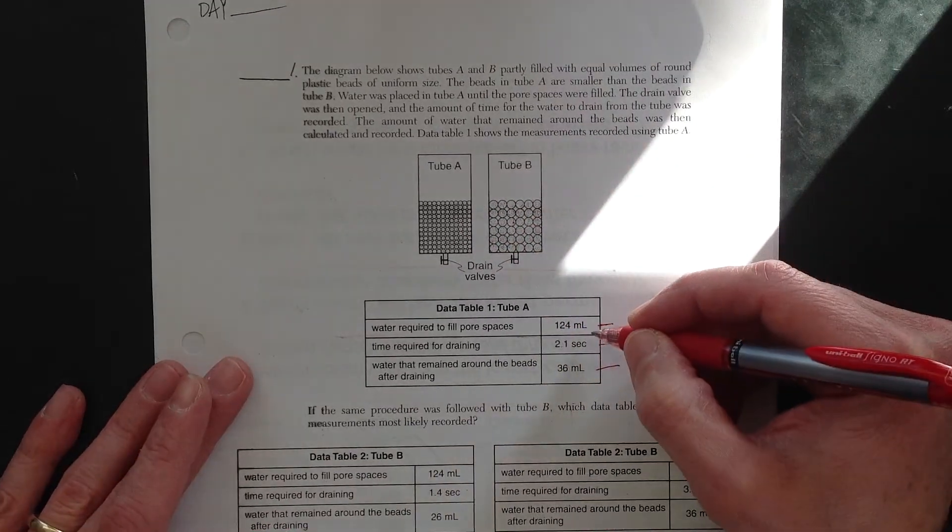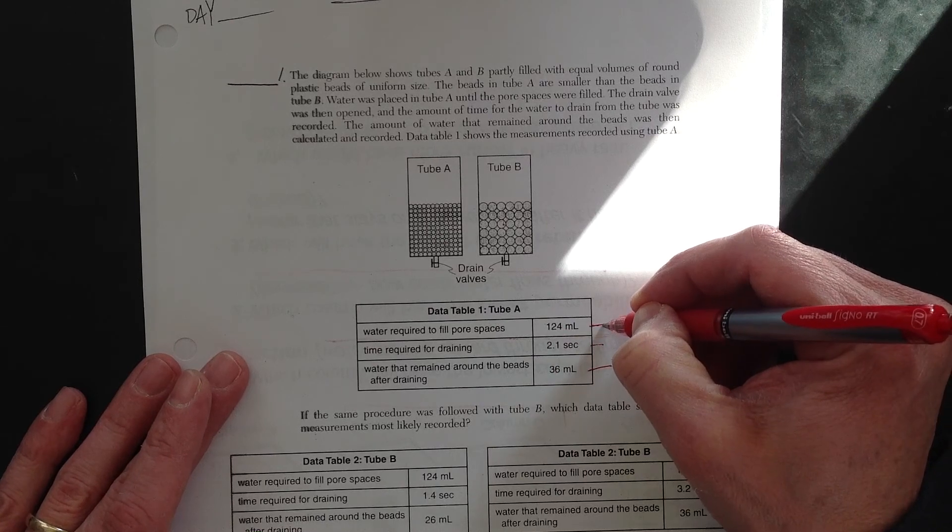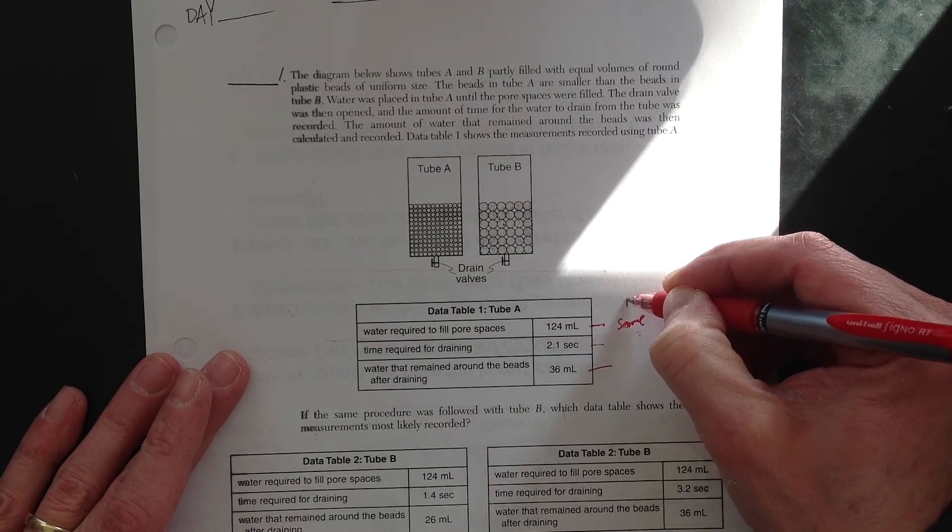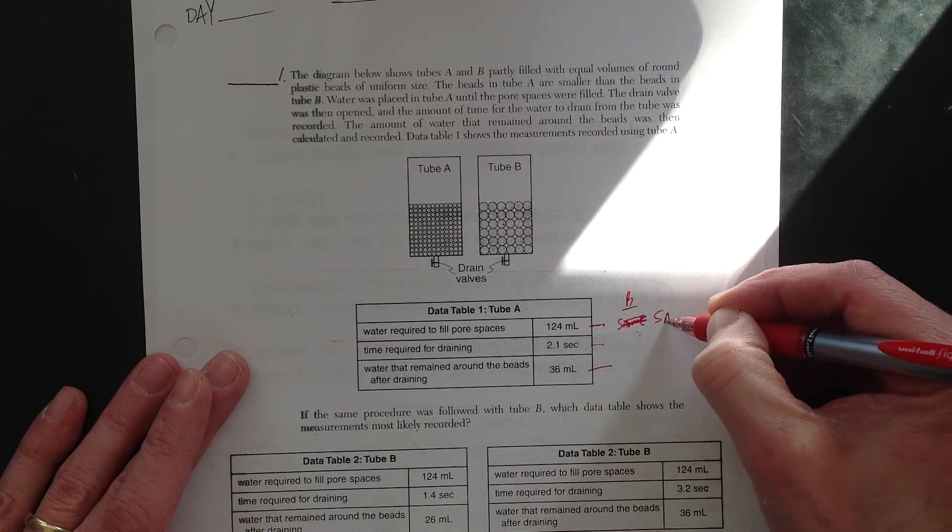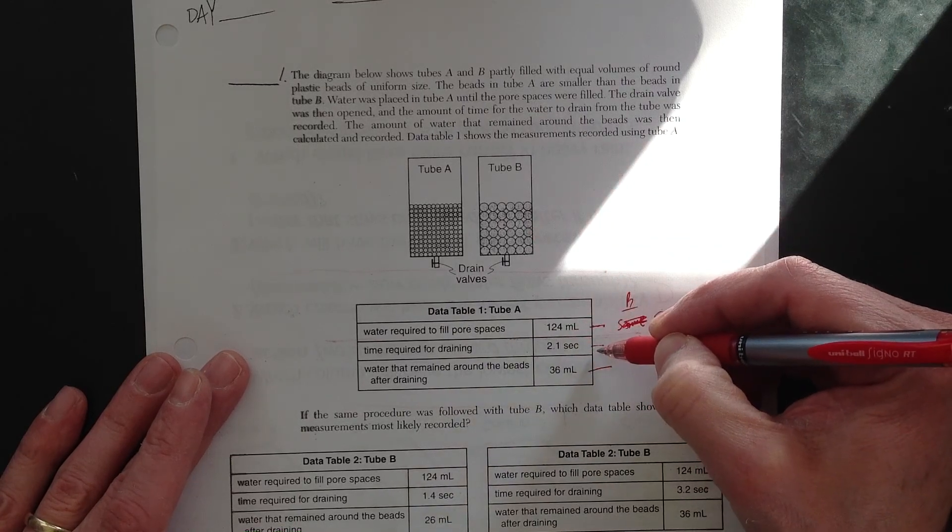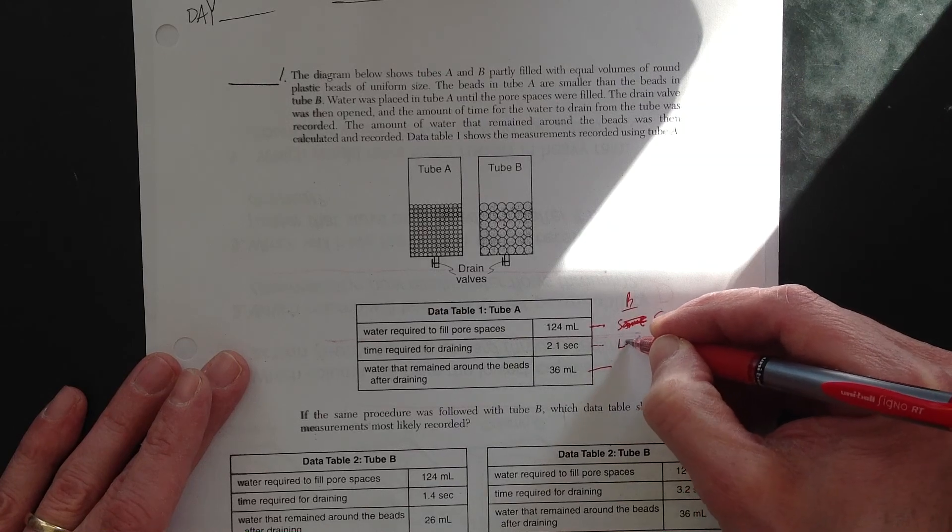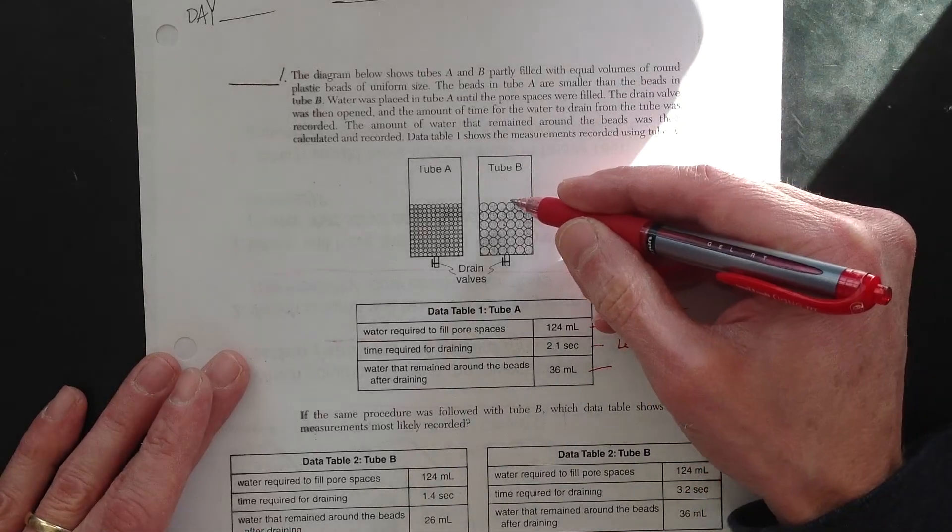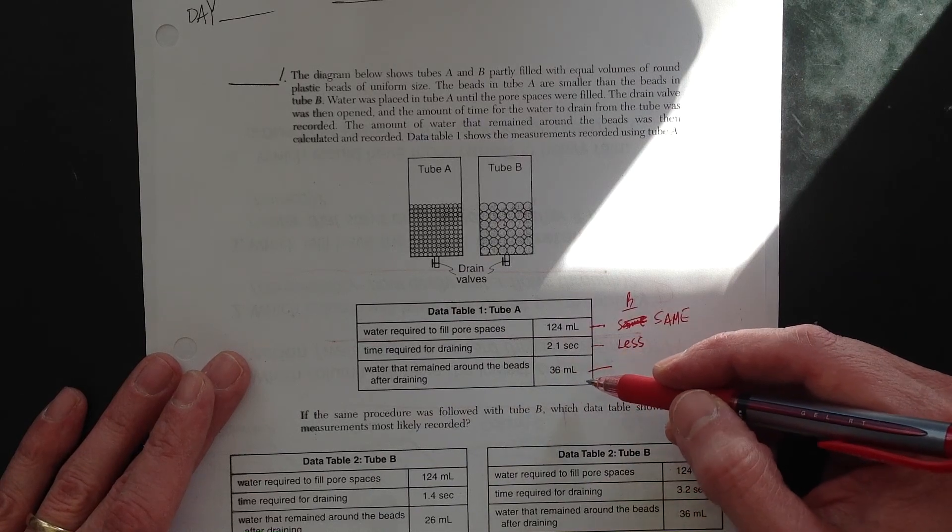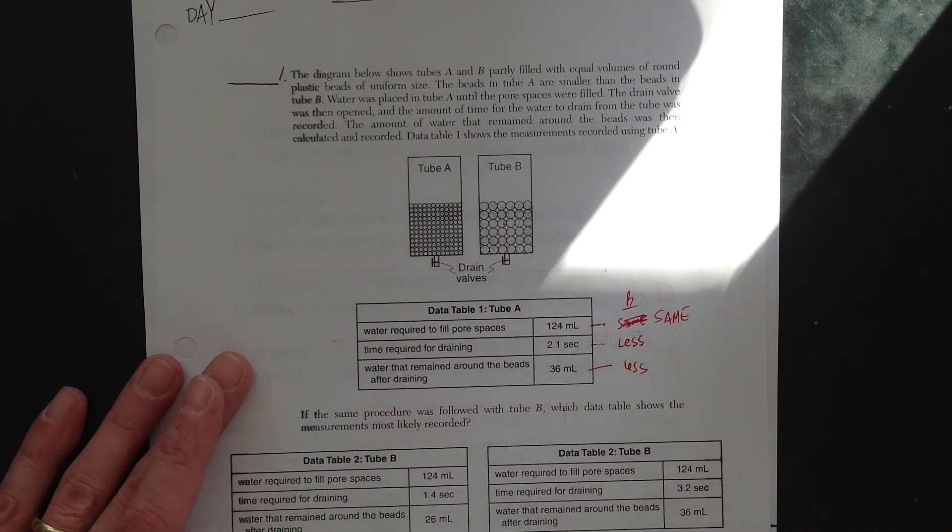So this is for A. And you want to compare it to B. So B, you should have, I could tell you some basic things. B, the porosity should be the same for B. B, so it should be the same, same for B. That says same. Let's write that nicer. That says same. The time required for draining for B should be more or less, or the same. It should be less. Right? Time to go through. Water will go through faster through B. And water that remained around the beads after draining, because B is larger, should be less as well. So that's what I'm looking for in these choices here.